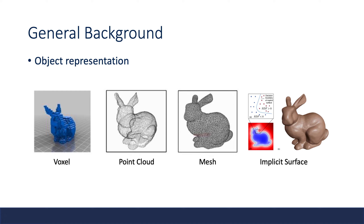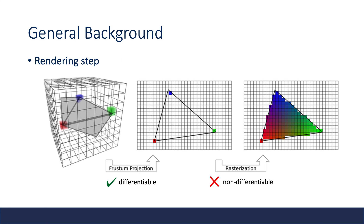Now we show some general backgrounds. Unlike 2D representation, objects can have very different representations in 3D forms — for example, voxels, point clouds, mesh, or implicit surface. Different renderers usually have their own implementations, but they usually include two steps. The first is to project objects from 3D coordinates to the camera image plane; this step is fully differentiable because it only involves matrix multiplication. The second step is rasterization, which assigns colors to discrete pixels in the image plane, and this step is usually non-differentiable.